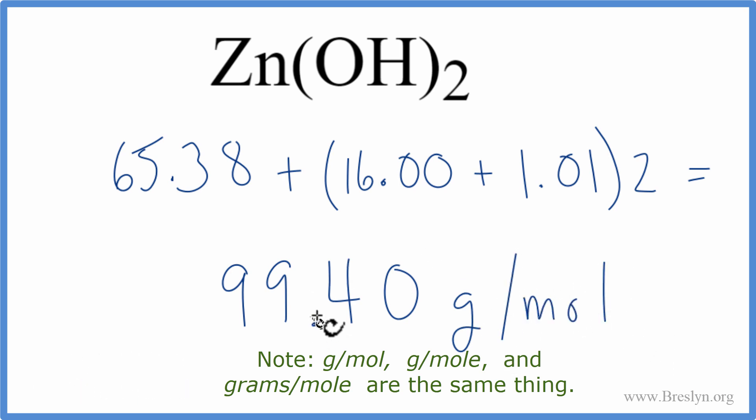You may have gotten a slightly different answer, maybe 99.39, if you rounded to more decimal points than I did in this video. But either way, this is the process for finding the molar mass for zinc hydroxide, Zn(OH)₂.